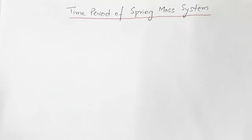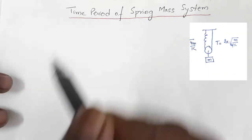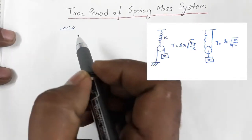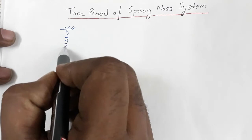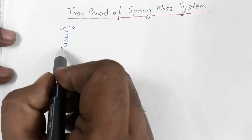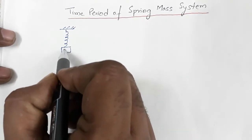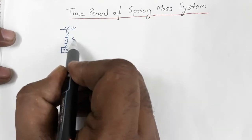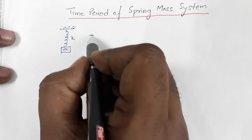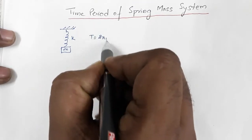Hello everyone, welcome to my channel. In this video we are going to observe the time period of a spring-mass system. Suppose a normal spring-mass system: this is a rigid support, this is an ideal massless spring, connected to a block of mass m. Suppose k is the spring constant. For such a system we know that T is equal to 2π√(m/k).